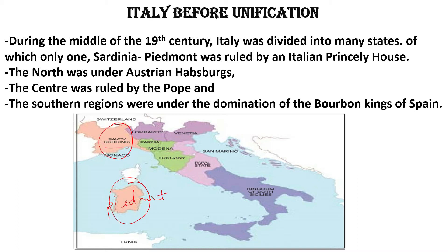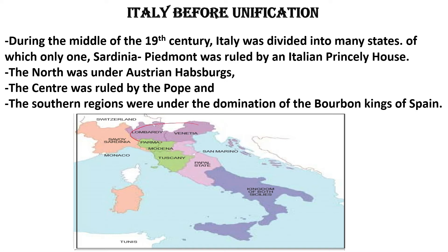The power belongs to Italy from the princely house. The North was under the Austrian Habsburg Empire. You can see on the map the purple state — Lombardy and Venetia. This northern region is under Austrian Habsburg control.